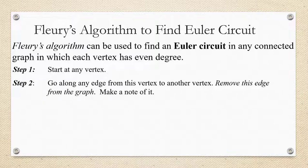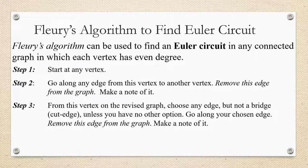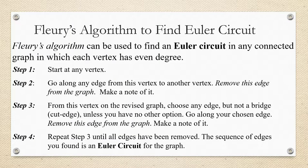Step two, we're going to go along any edge from that vertex to another vertex, remove that edge from the graph, and make a note of what edge we just removed. Then from this vertex on the revised graph, we'll choose any edge we want as long as it's not a bridge unless there's no other option. So weaving bridges for last. Go along your chosen edge, remove that edge from the graph, and make a note of it. And we're going to continue that process until we've removed one by one all of the edges. The sequence then of recorded edges is going to be our Euler circuit.